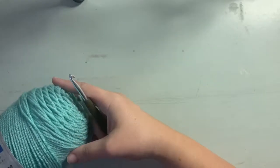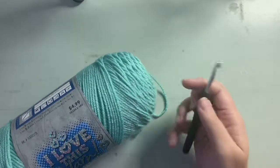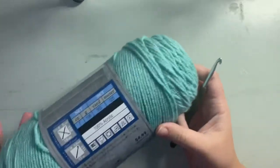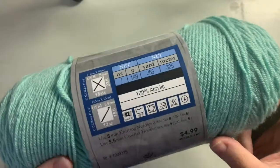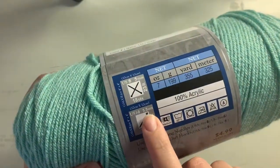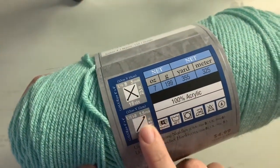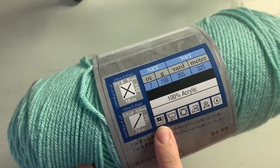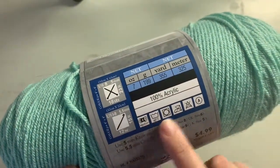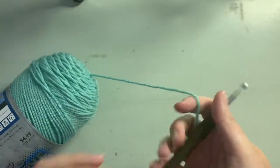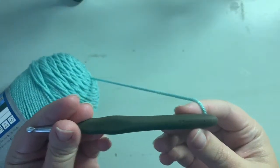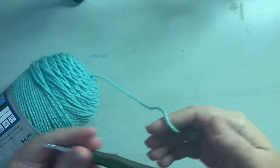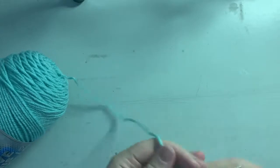So the very first thing that you may be wondering is what size crochet hook do you need? All you have to do is find it on your yarn ball here. It's five and a half millimeters for this number four or worsted weight yarn, so we have our five and a half millimeter hook and we're gonna get started.